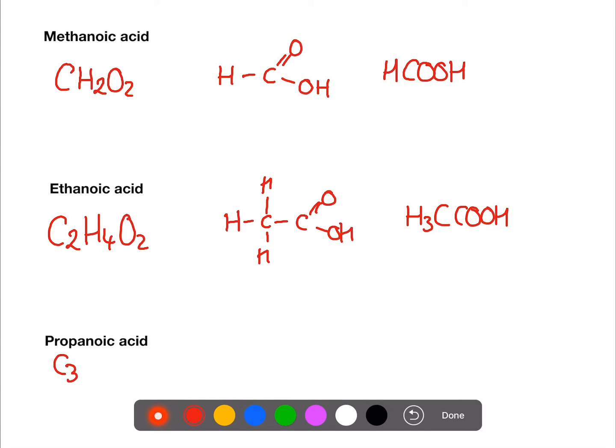Propanoic acid, C3H6O2. So we have three carbons and on the end one we have the functional group.